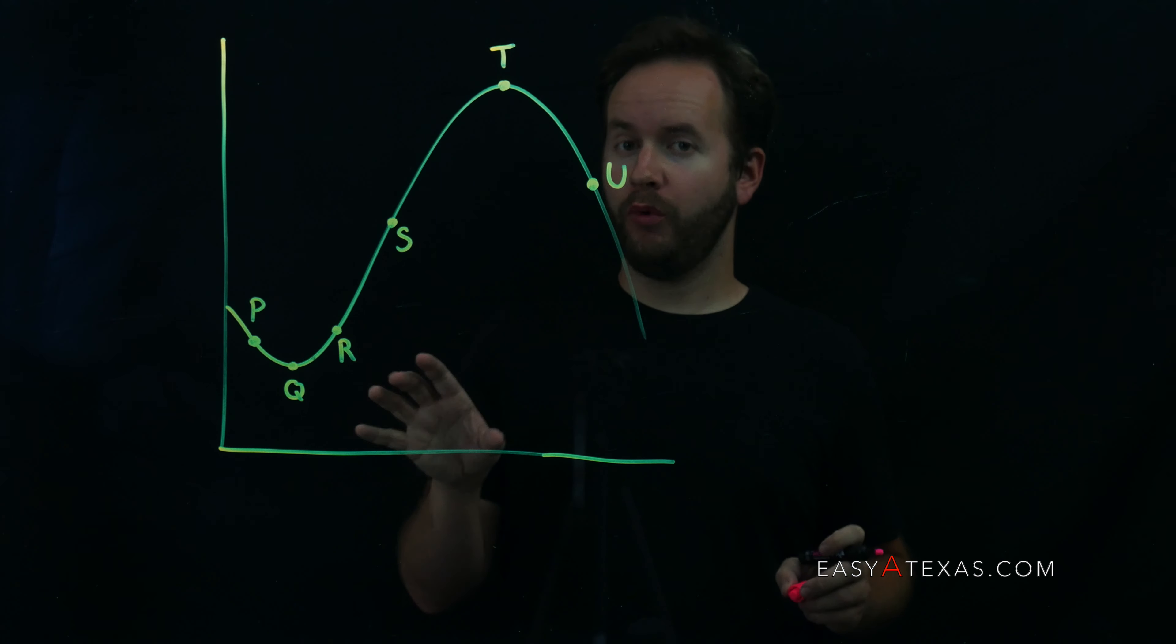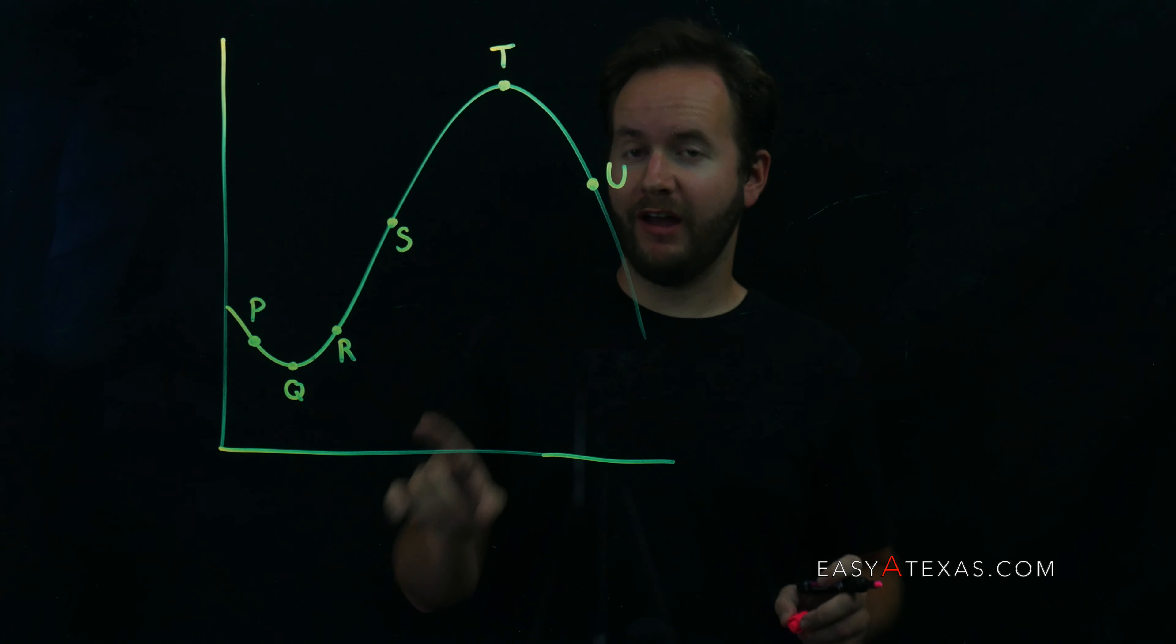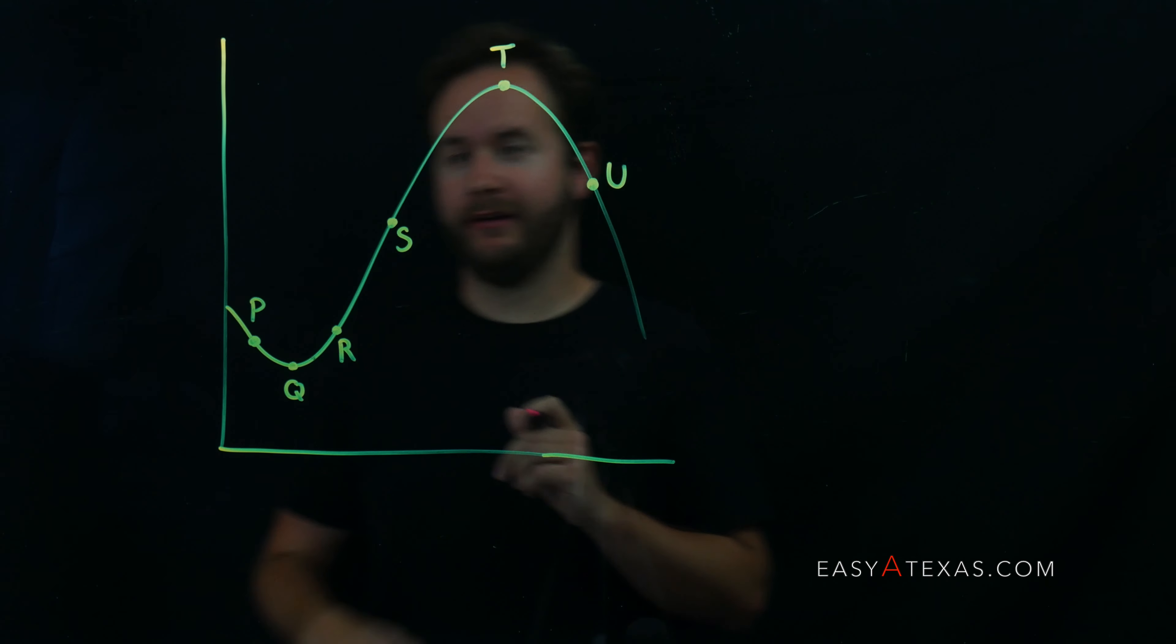Here we have a graph, and we're being asked at which point is the tangent line drawn to the graph parallel to the secant line connecting P and T.